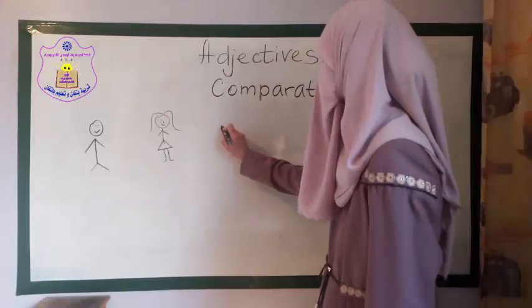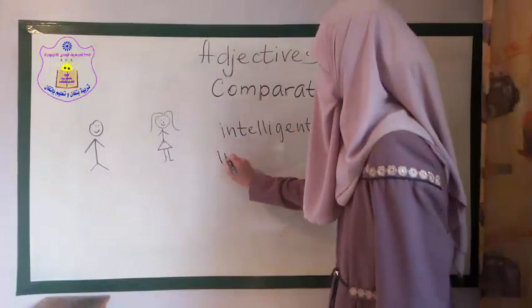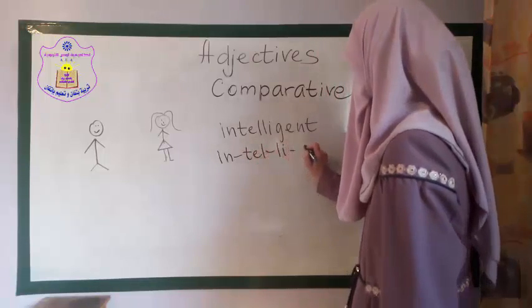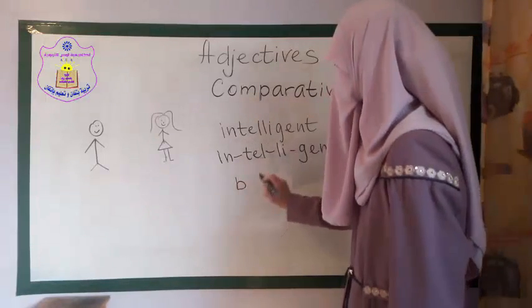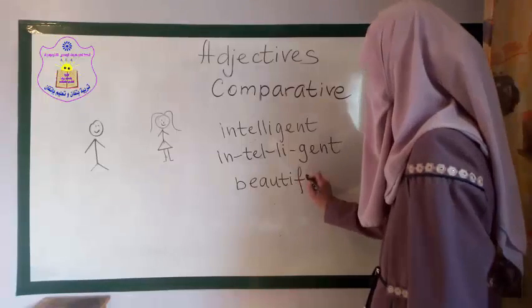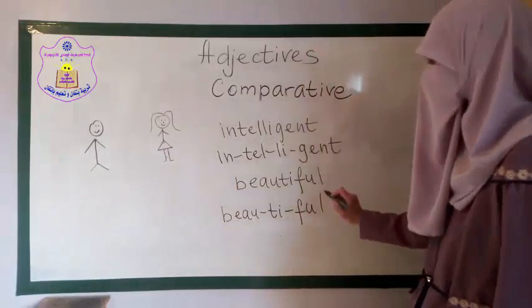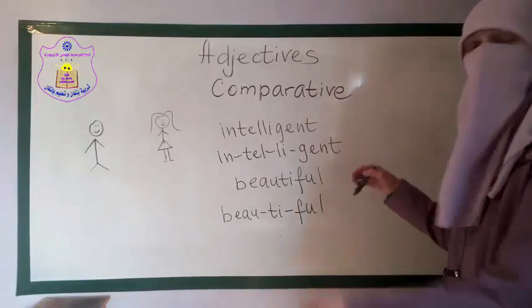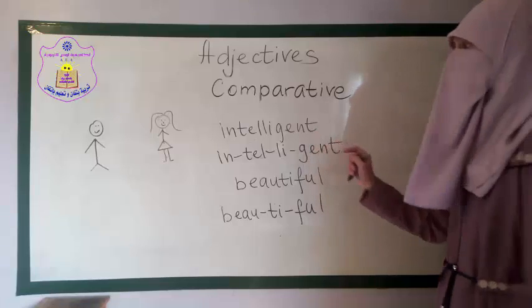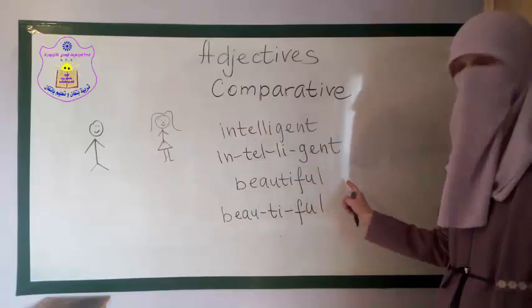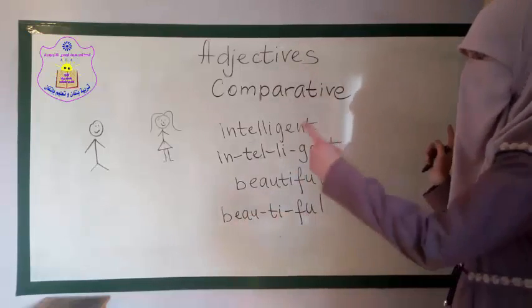Now we have long adjectives. For example, 'intelligent' — it has four syllables. Another adjective is 'beautiful' — it has three syllables. These are long adjectives. 'Intelligent' is a long adjective with four syllables, and 'beautiful' is a long adjective with three syllables.